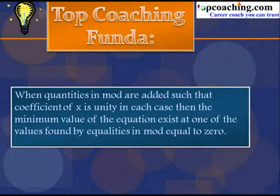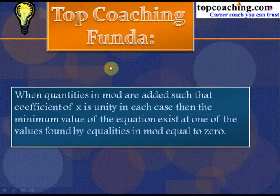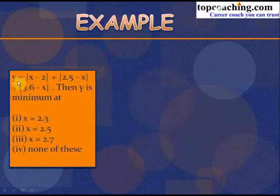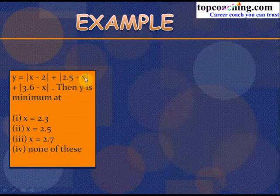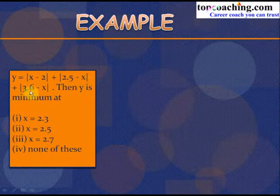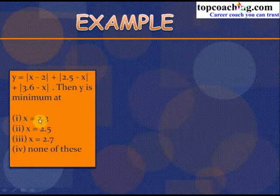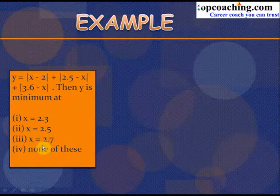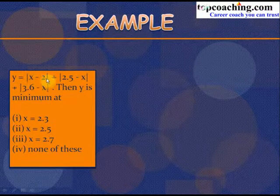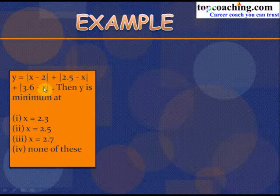This might seem confusing, so let's solve an example. The question: y = |x − 2| + |2.5 − x| + |3.6 − x|. Find the value of x at which y is minimum, given options x = 2.3, x = 2.5, x = 2.7, or none of these. Each term has coefficient of x equal to 1.